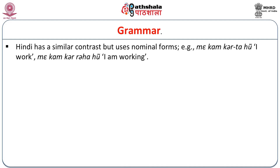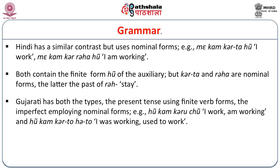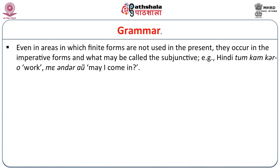In Bengali, a contrast is made between continuous or actual present and non-continuous or habitual present. For example, ami kaj kuri (I work, literally 'I do work') with the ending -e, contrasts with ami kaj korchi (I am working), in which -cha- intervenes between the root and the ending. Hindi has a similar contrast but uses nominal forms: may kam karta hun (I work), may kam kar raha hun (I am working). Both contain the finite form hun of the auxiliary, but karto and kar raho are nominal forms — the latter being the past of rah 'to stay'. Gujarati has both types: the present tense using finite verb forms, and the imperfect employing nominal forms.